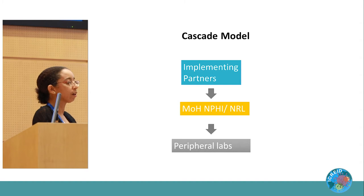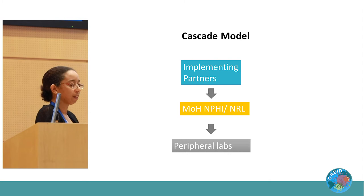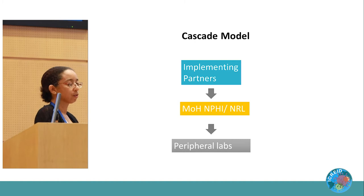We are using a CASCADE model whereby, in the first stage, with the assistance of implementing partners, we reinforce the Ministry of Health — for example, the Laboratory Directorate — the National Public Health Institute where one exists, or the National Reference Lab. In the second stage, once those actors have been capacitated, they will lead the way to reinforce the peripheral-level labs.